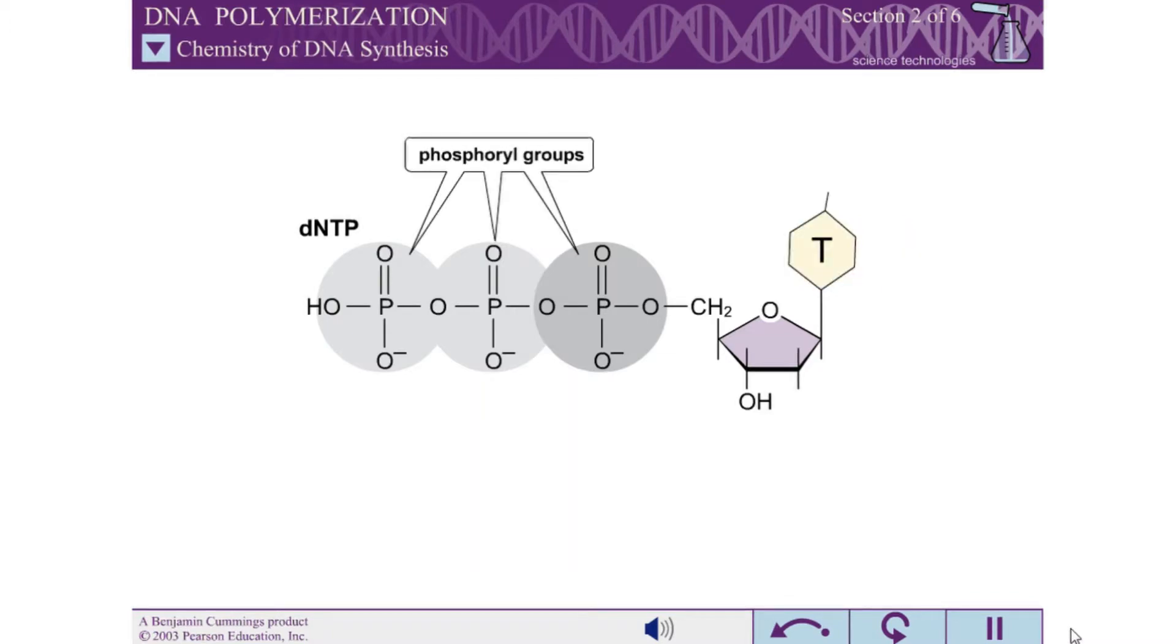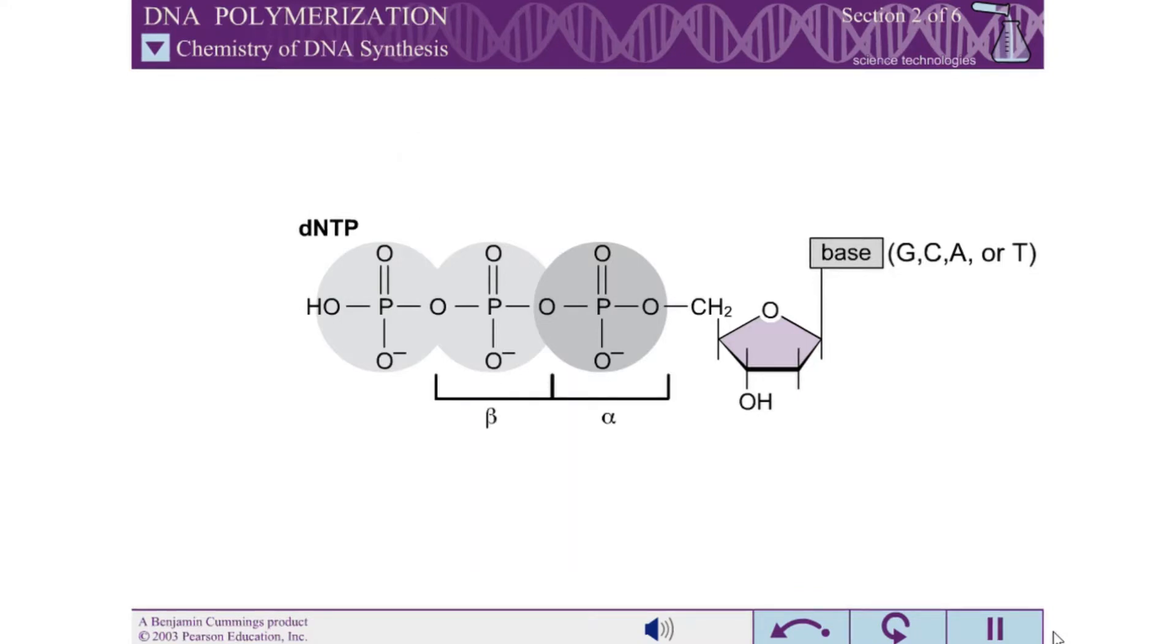Has three phosphoryl groups which are attached via the 5 prime hydroxyl of the 2 prime deoxyribose. The phosphoryl group closest to the ribose is the alpha phosphate, the middle group is the beta phosphate, and the outermost group is the gamma phosphate.